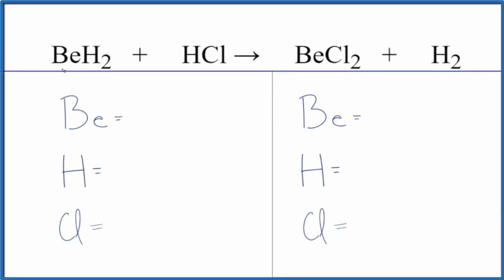In this video, we'll balance the equation for BeH2 plus HCl. This is beryllium hydride plus hydrochloric acid. Let's count the atoms up and balance the equation.